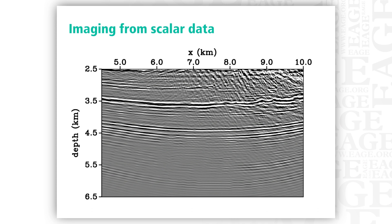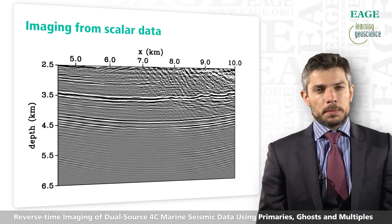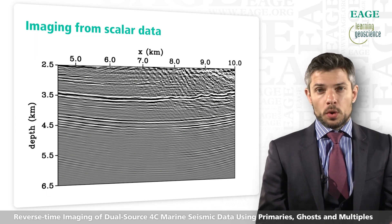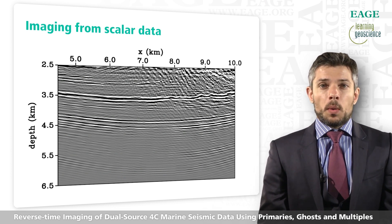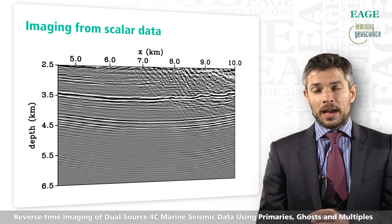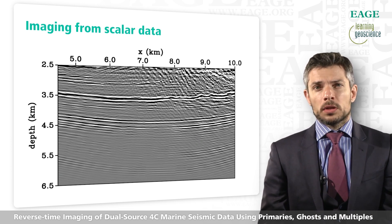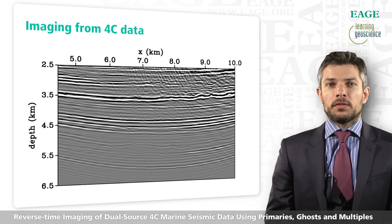Here is an image from scalar RTM — standard reverse time migration from a pressure source recorded at pressure receivers. A free surface is present in the model, generating multiples and ghosts, but no de-ghosting was applied prior to imaging. You can see the ghosts present in this image. However, if we use the full vector data — the full four-component data — we go from this scalar image to a much improved full vector acoustic image.